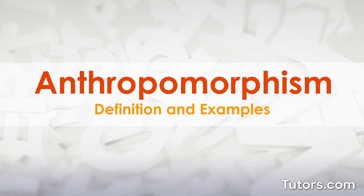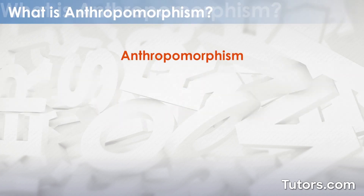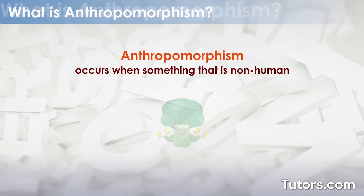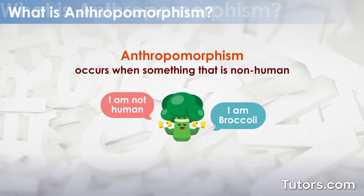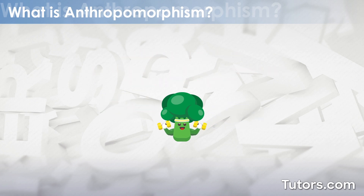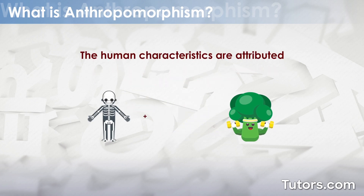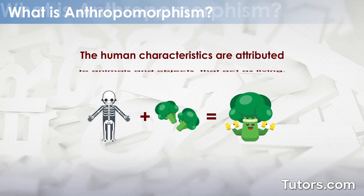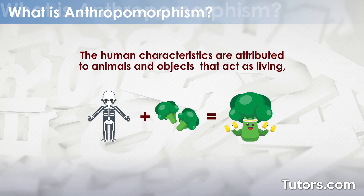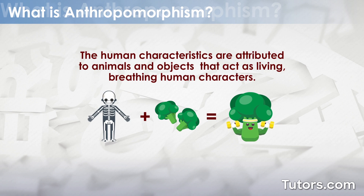Anthropomorphism occurs when something that is non-human behaves like a human. The human characteristics are typically attributed to animals and objects that act as living, breathing human characters.